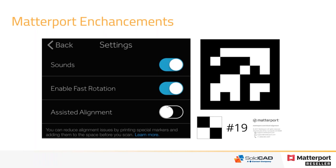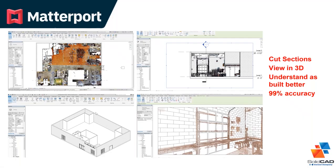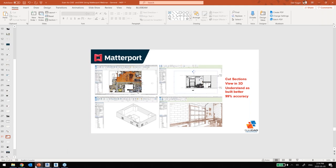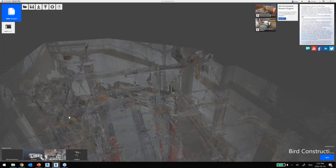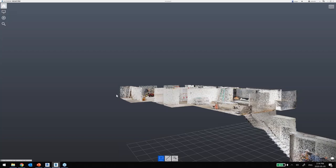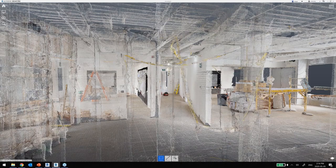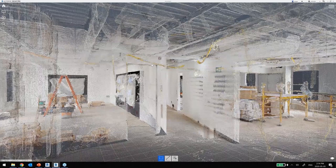For in-ceiling scans with Matterport, the only way to deal with ceilings is to pop them open — remove the ceiling tiles so you can get the Matterport scanner in there. Here's an example of an open ceiling where we can see the outline of the ductwork. If you need all that ductwork behind ceiling tiles, you're going to have to remove them.